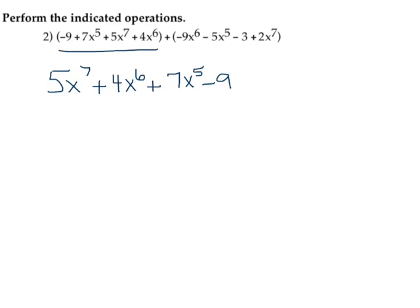We're setting this up in what I call column form. Next down here we have 2x to the seventh, so I'm going to write plus 2x to the seventh. Then we have minus 9x to the sixth, minus 9x to the sixth power, and then minus 5x to the fifth power, and then minus 3.